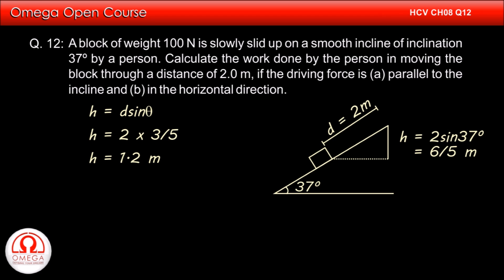Now the work done is equal to increase in potential energy, i.e., mgh. The value of mg is 100 Newton. Putting the values, we get work is equal to 100 times 1.2 or 120 joules. This is the answer to part A of the question.